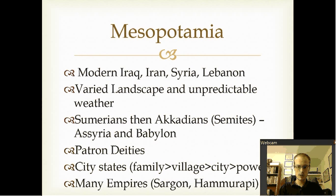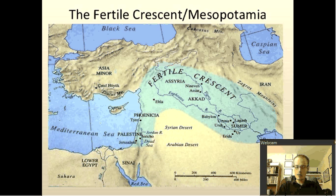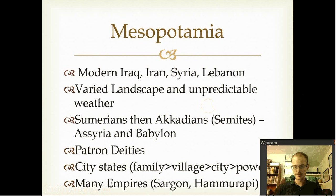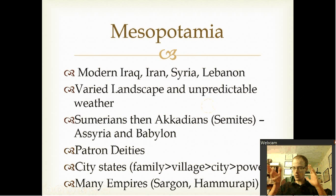The first area is called Mesopotamia — that's over here where the land of Sumer and Akkad is. Mesopotamia is what is today Iraq, Iran, Syria, and Lebanon, mostly Iraq. This goes kind of for the whole area in the Middle East and Near East.